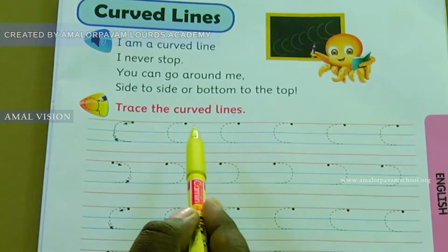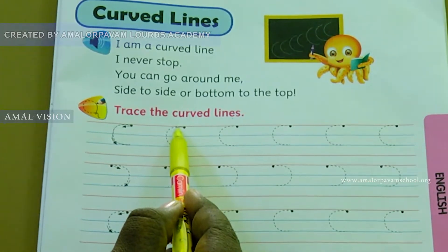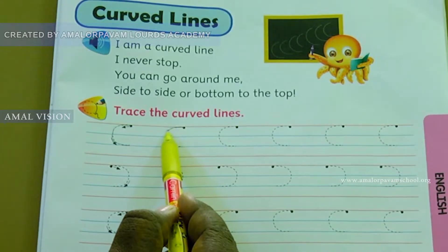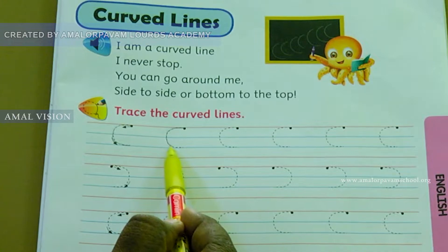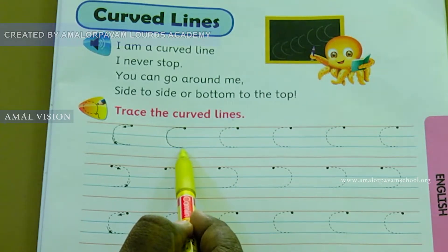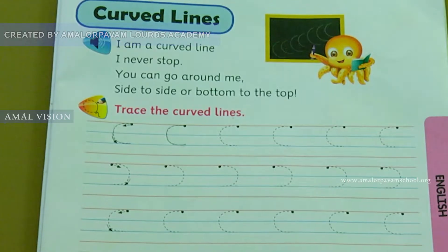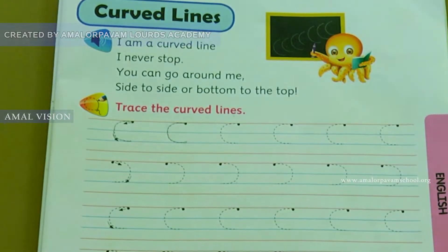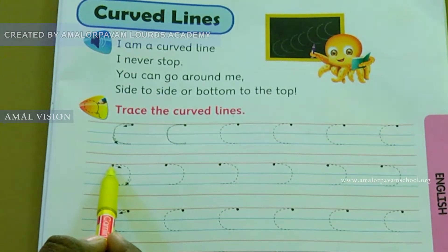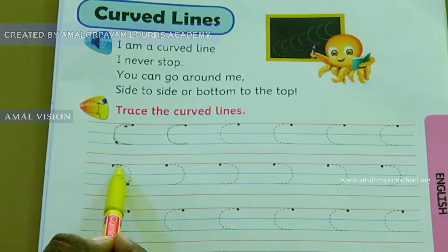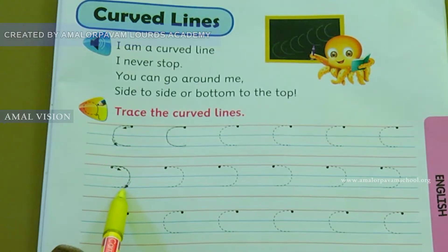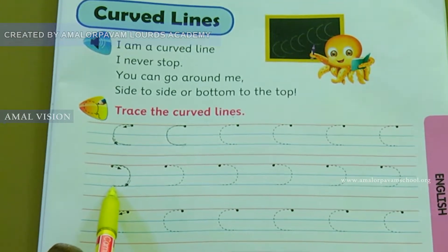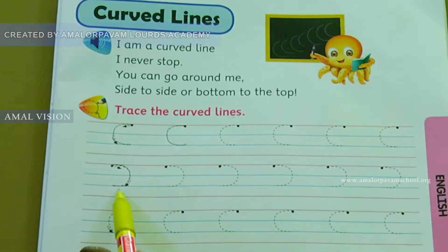What is this? This is right curve. Now, keep your pencil on the dot. Move your pencil. Touched up blue line. Bend a little. What is this, children? This is right curve. Now, shall we go to the next line? Keep a pencil on the dot. Move your pencil. Come down. Touched up blue line. Bend. What is this? This is left curve.